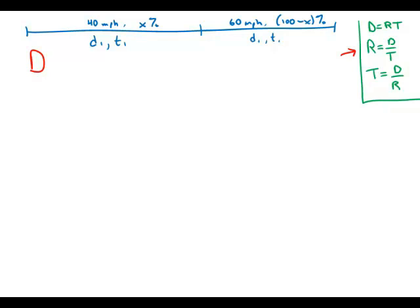X percent of that total distance is D1. I'm just going to write that X percent as a fraction, X over 100 times capital D. That's the distance in the first part of the trip. D2, that's the complementary percent, 100 minus X. So I'm going to write 100 minus X as a fraction, 100 minus X over 100 times D. That's distance 2.